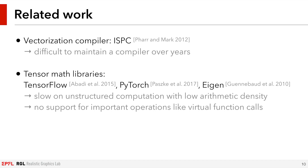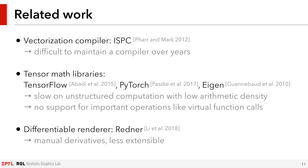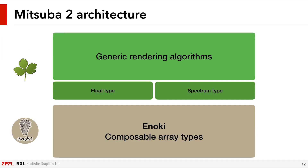Moreover, there is no support for virtual function calls. Finally, Redner, created by Tsumaoli and colleagues, is able to run differentiable rendering with great performance on the GPU. However, it relies on manual derivatives. Differentiating rendering algorithms by hand turns out to be very difficult, and that makes this approach challenging to extend.